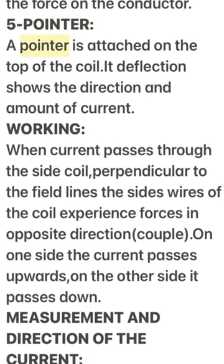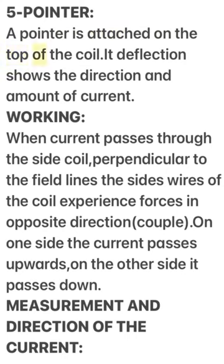5. A pointer is attached on the top of the coil; its deflection shows the direction and amount of current. When current passes through the side of the coil, perpendicular to the field lines, the side wires of the coil experience forces in opposite directions, forming a couple. On one side the current passes upwards; on the other side it passes downward.